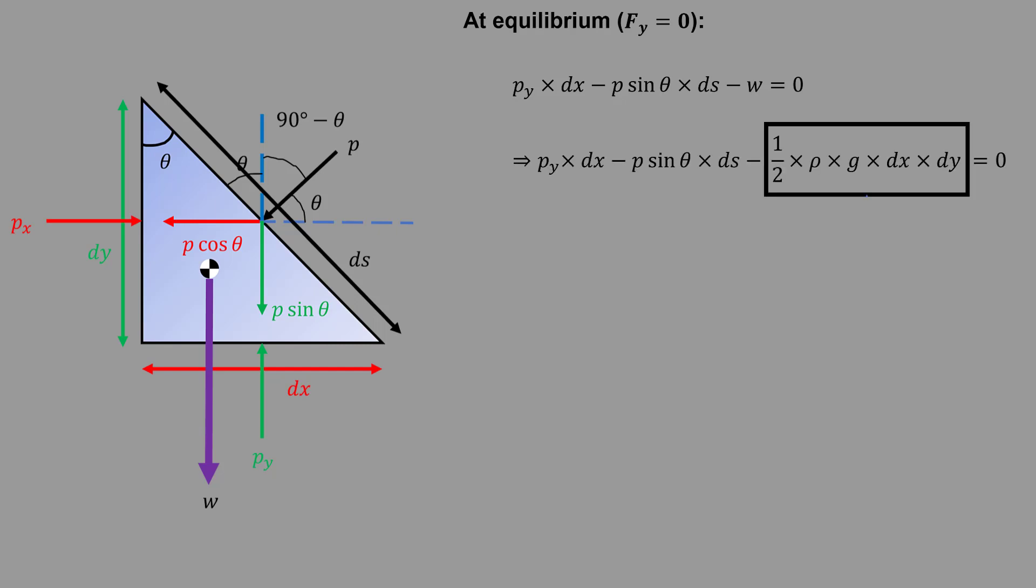Py dx minus P sin theta ds minus half rho g dx dy equals 0. In this equation, the third term becomes 0 as the value will be minimal.